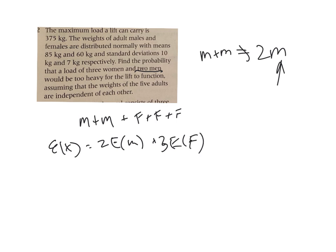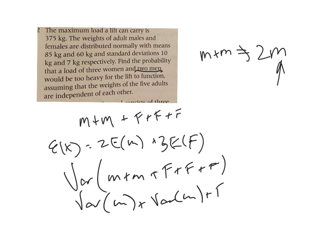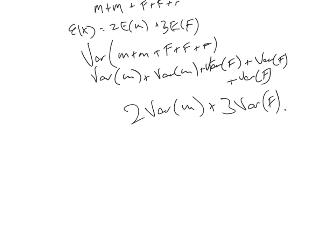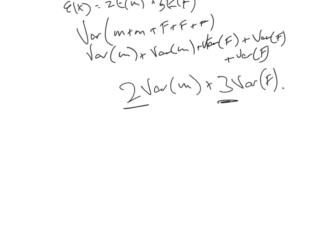But when you do the variance, it's the variance of m plus the variance of m plus the variance of f plus the variance of f plus the variance of f. So it's two variances of m plus three variances of f. So that's why these values are not squared.